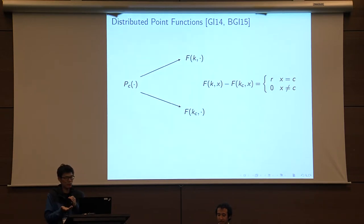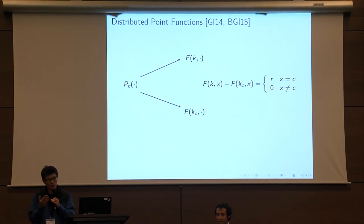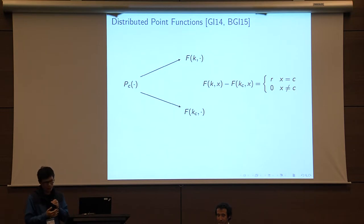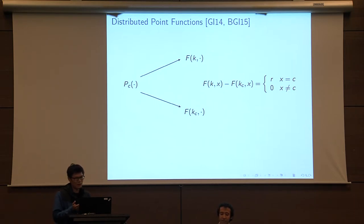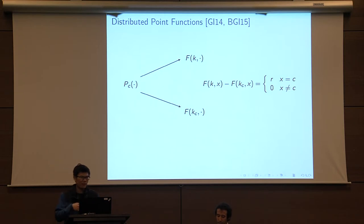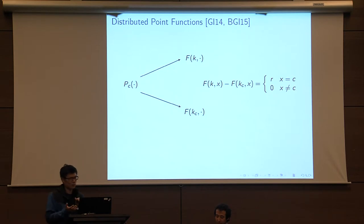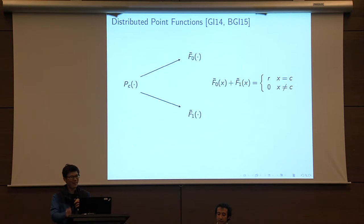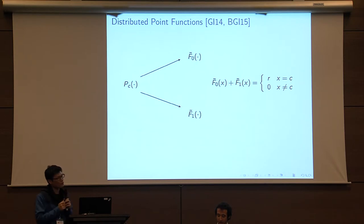You can instantiate distributed point functions using private puncturing by defining the first function as the regular PRF evaluation using the regular PRF key k, and the second function as the PRF evaluation using the punctured key. By correctness, if you evaluate the first and second function separately and subtract the result, you get a non-zero value for inputs x equal to c, and zero for inputs not equal to c. The security requirement for DPFs is that an adversary given only one of the two functions should not learn any information about the underlying point c.